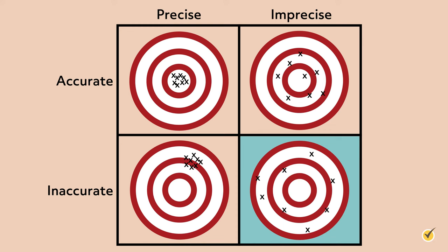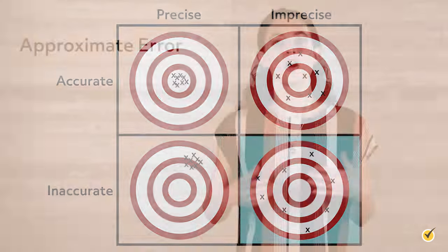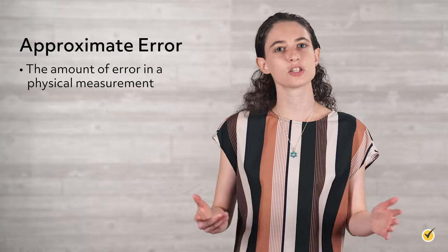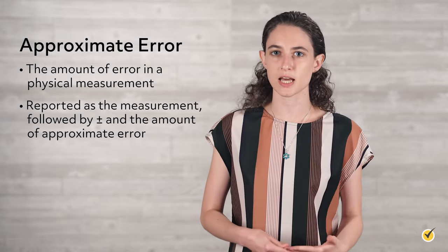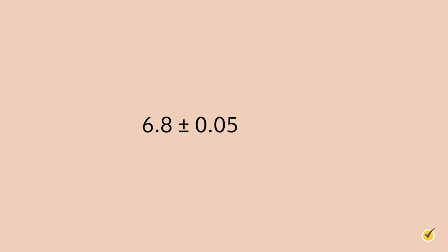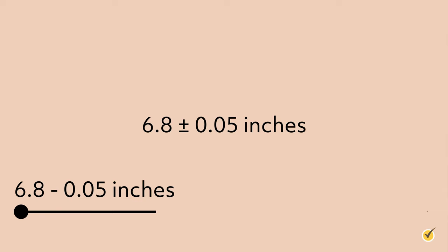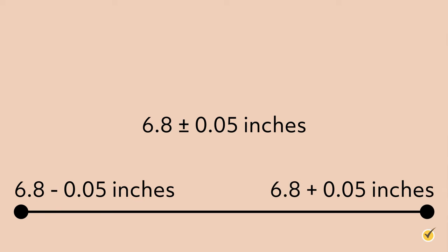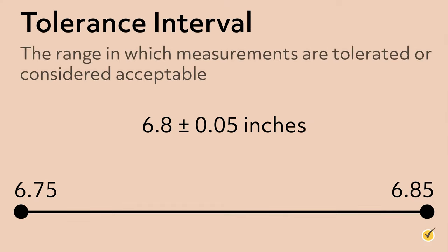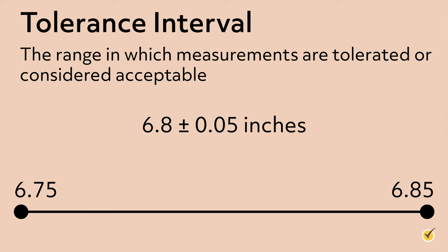Now that we've covered accuracy and precision, let's talk about errors. Approximate error refers to the amount of error in a physical measurement. It is often reported as the measurement followed by the plus or minus sign and the amount of the approximate error. For instance, consider an approximate error of 6.8 ± 0.05 inches. This gives us a range of 6.8 − 0.05 to 6.8 + 0.05, which equals 6.75 to 6.85 inches. This range is known as a tolerance interval — the range in which measurements are considered acceptable.